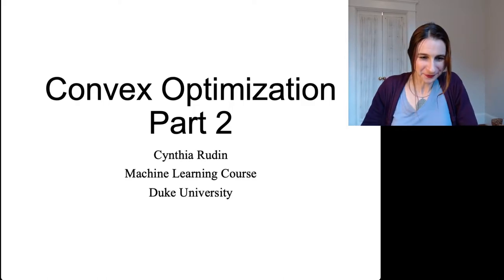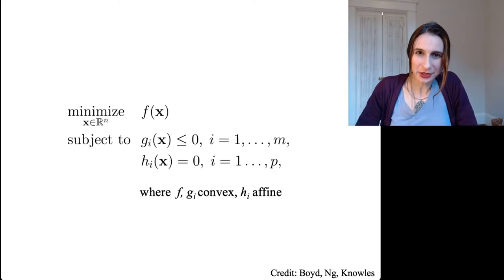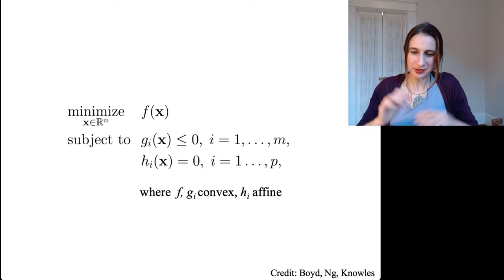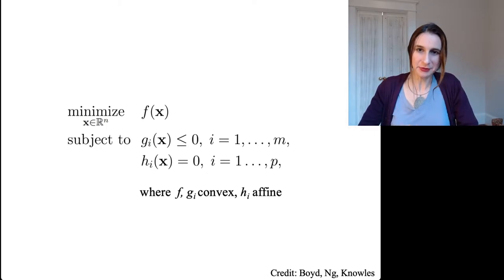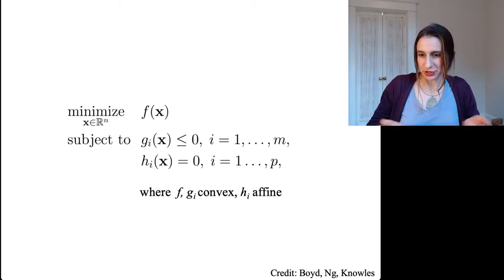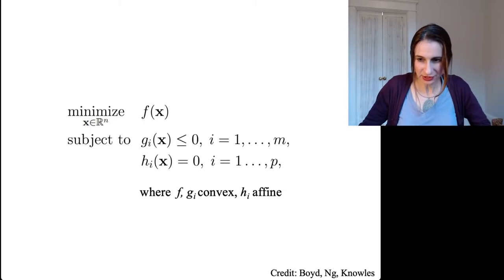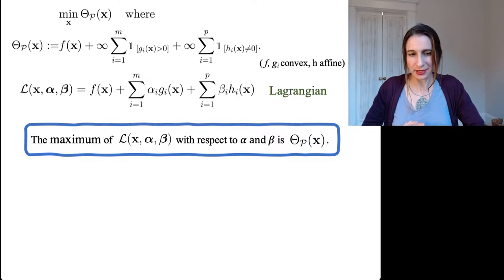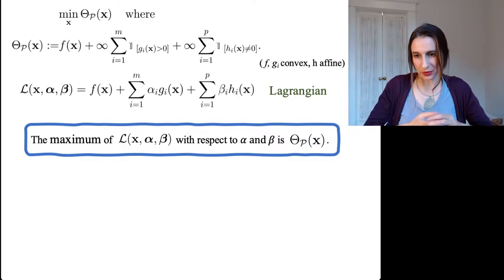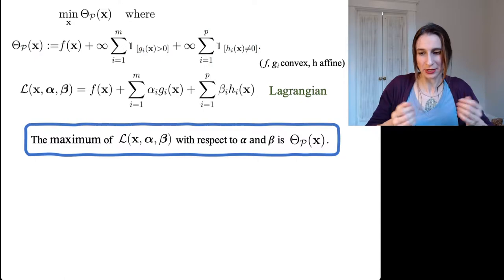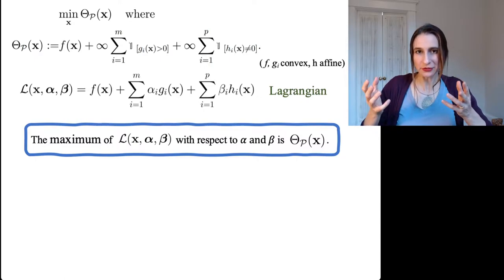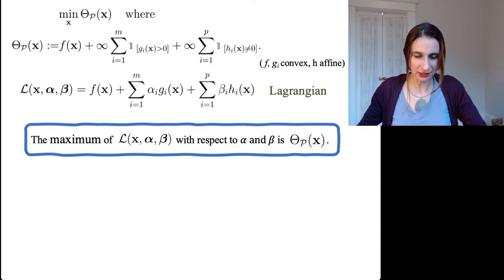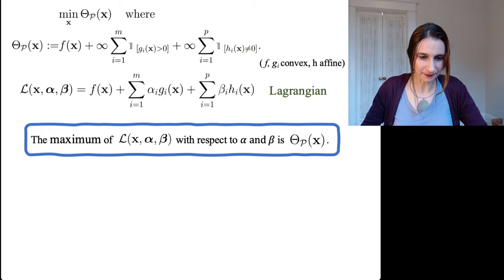Convex optimization part 2. In the previous video we talked about how we want to solve this particular optimization problem where f and the gi are convex and the h's are affine. We reformulated it slightly so that the primal objective is infinite if any of the constraints are violated, and then we lower bounded that by the Lagrangian.